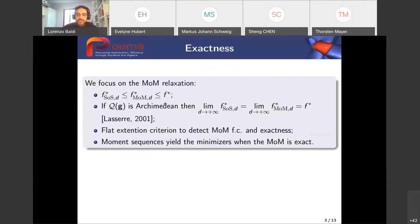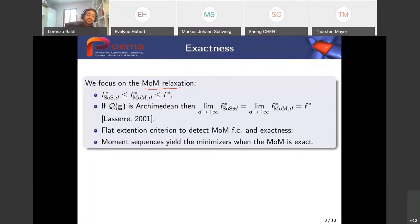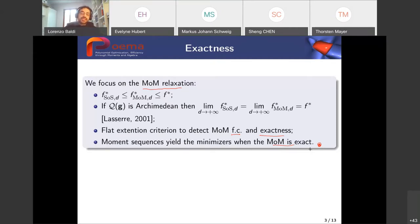Let me recall some properties of these relaxations, in particular the moment one. We know that both the sum of squares and moment relaxations are lower approximations of the infimum. If the quadratic module is Archimedean, then we have convergence of these two approximations to the infimum — to the minimum in this case. For the moment relaxation, we have a way to detect finite convergence as exactness: the flat extension criterion for the moment matrix associated with linear functionals, or the Hankel matrix. If the moment relaxation is exact, the moment sequence yields minimizers.